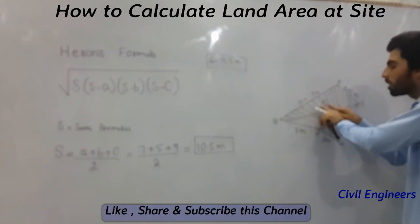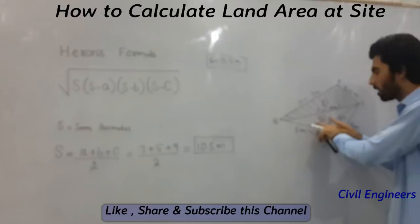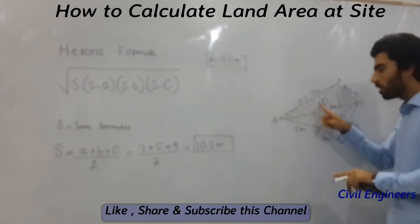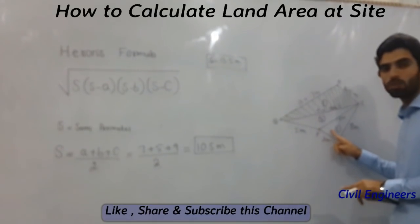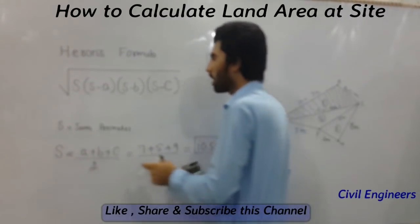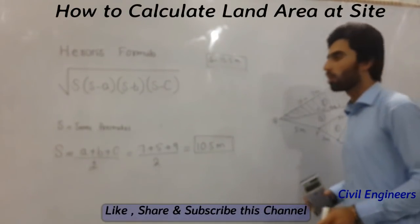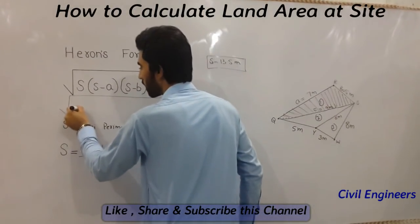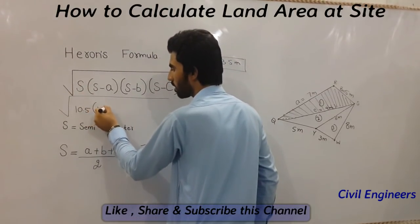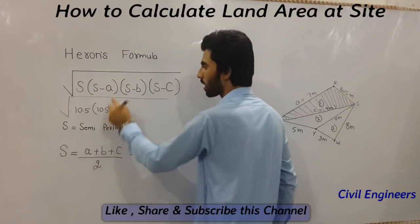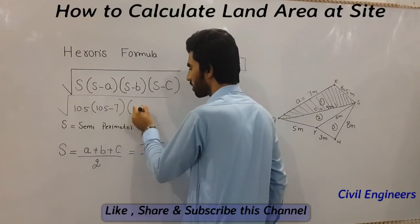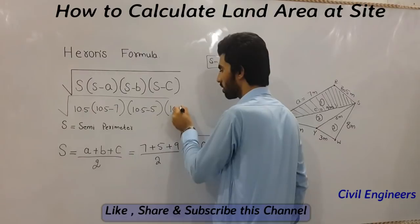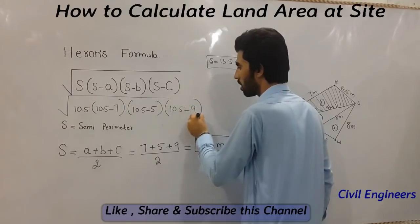Now I have to find out the area of triangle number one using Heron's formula. You can then find the area of triangle number two and triangle number three the same way, and by adding all three triangle areas together you get the total area of the close traverse. For triangle one: S is 10.5, S minus A is 10.5 minus 7, S minus B is 10.5 minus 5, and S minus C is 10.5 minus 9.